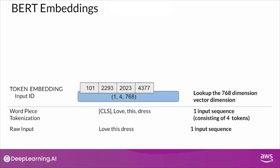The token CLS gets an embedding of 101 because that is the position of CLS in that 768 dimension vector. Similarly, the token 'love' gets a token embedding of 2293. The token 'this' gets a token embedding of 2023, and so on.